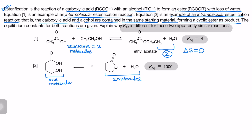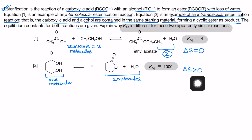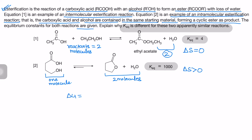In this case, entropy change ΔS is greater than zero, because on the product side there are more molecules, meaning more randomness. From thermodynamics we know that Gibbs free energy change ΔG = ΔH − TΔS. If entropy change is positive, ΔG will become more and more negative.